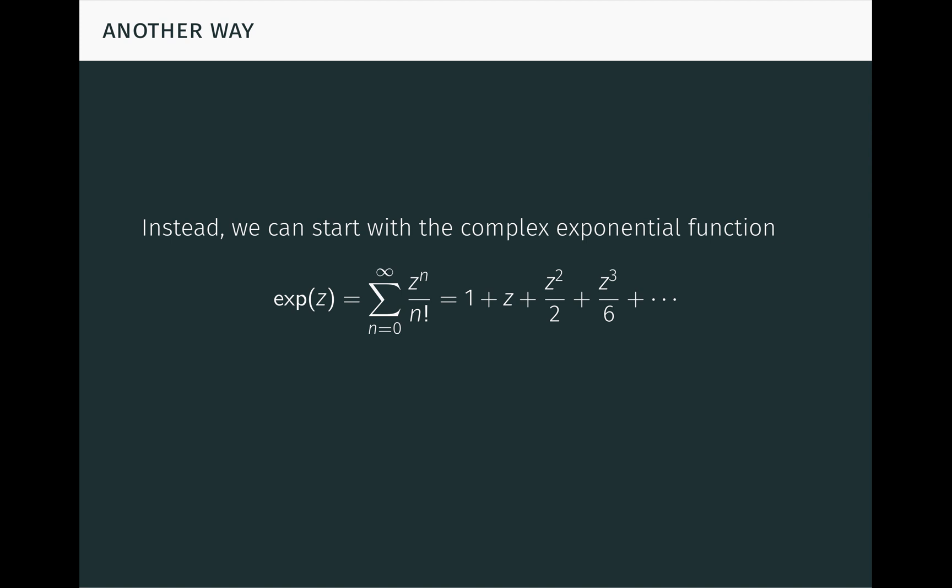Instead, we can get to pi another way, starting with the complex exponential function. For a complex number z, this function computes an infinite series, the sum from n equals 0 to infinity of z to the n over n factorial. This is not an arbitrary starting point, because this is actually one of the most important functions in mathematics.